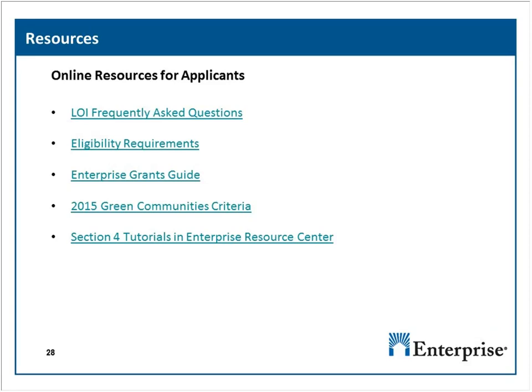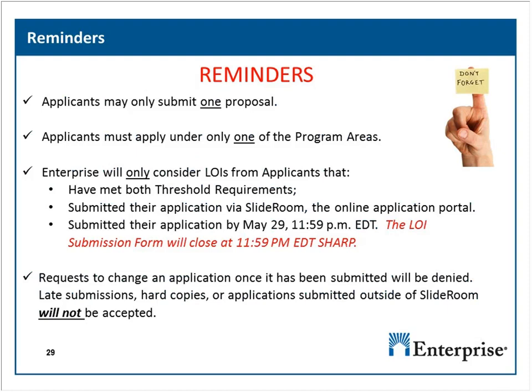Key resources can be found on our grants webpage as hyperlinks for direct access. As reminders: applicants may submit only one proposal and must apply under only one program area. Enterprise will only consider LOIs from applicants that meet threshold requirements and have submitted through SlideRoom by May 29th at 11:59 p.m. Requests to change an application once submitted will be denied, and late submissions, hard copies, or applications submitted outside of SlideRoom will not be accepted.